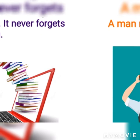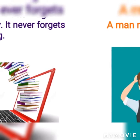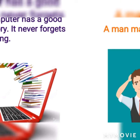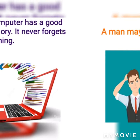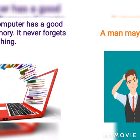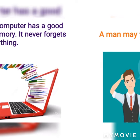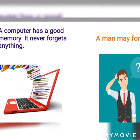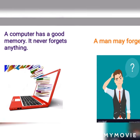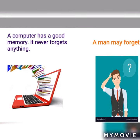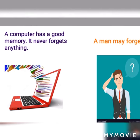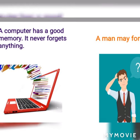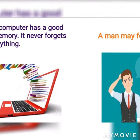Next, a computer has a good memory. It never forgets anything that is stored in it. Computer's memory is very strong. But a man may forget — he can forget the information stored in his mind.